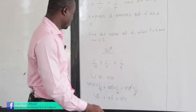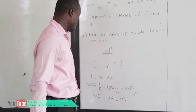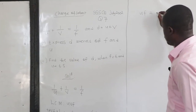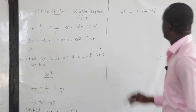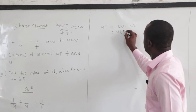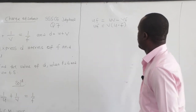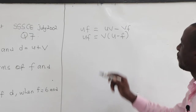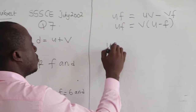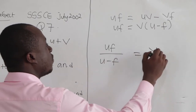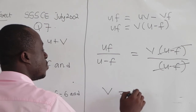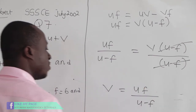I want to make v the subject. Taking vf to the other side: uf equals uv minus vf. Factorizing v out: uf equals v times u minus f. Dividing both sides by u minus f, we get v equals uf over u minus f.